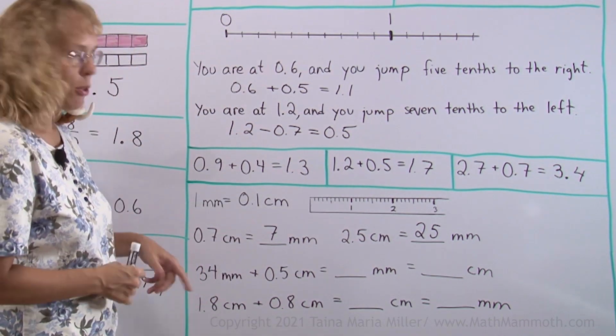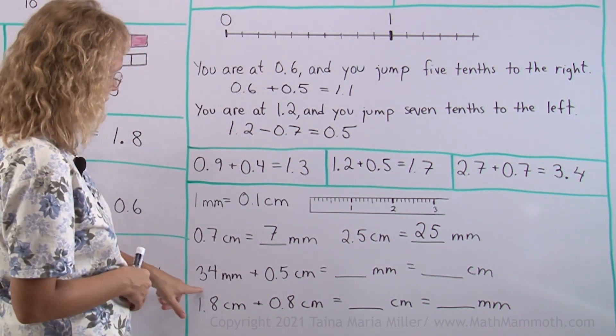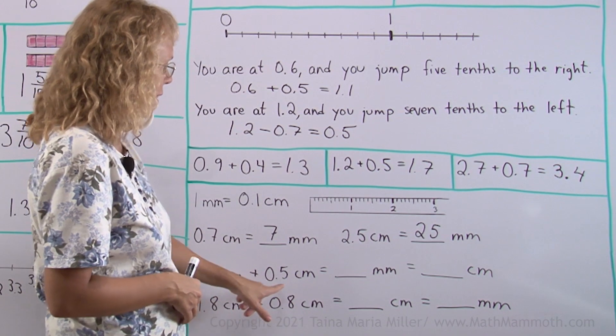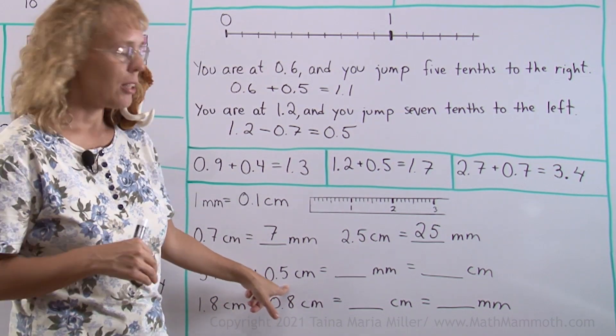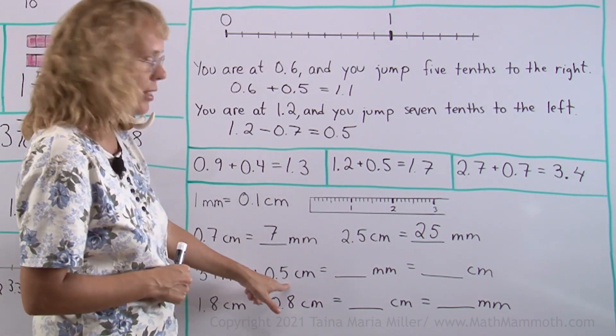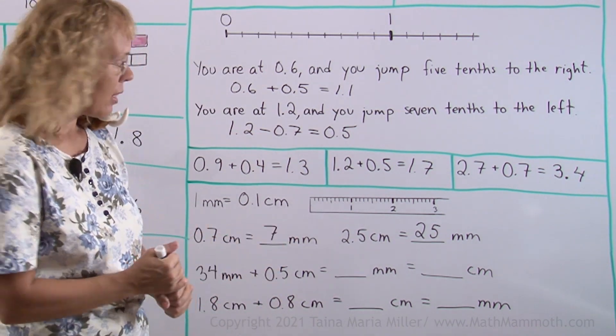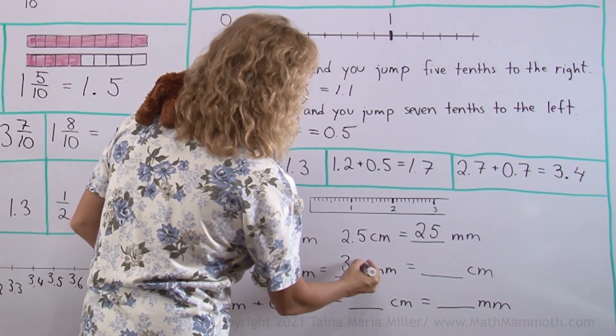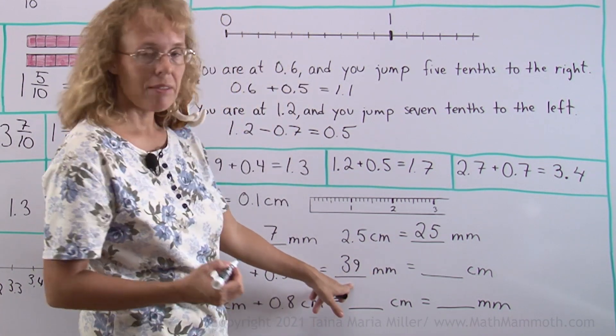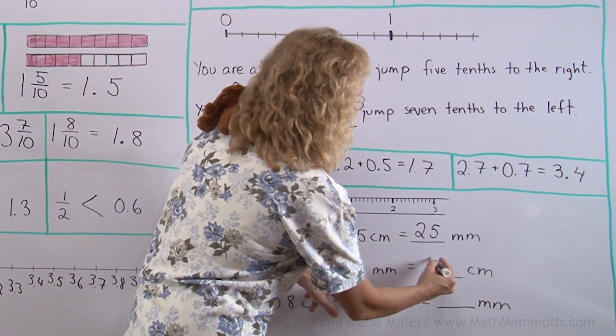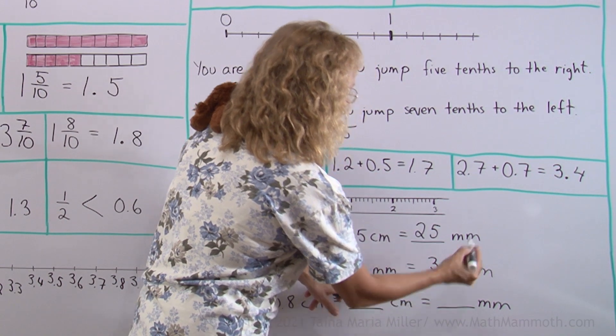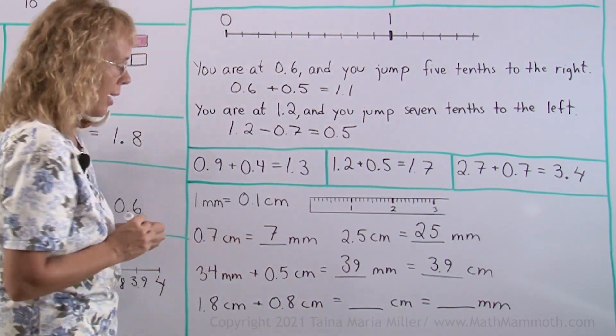It's an addition problem with lengths. 34 millimeters plus 5 tenths of a centimeter. Now 5 tenths of a centimeter is 5 millimeters. So this is 34 plus 5. 39 millimeters. At the same time, if we write this as centimeters, we will get 3 whole centimeters and 9 tenths of a centimeter. 3.9.